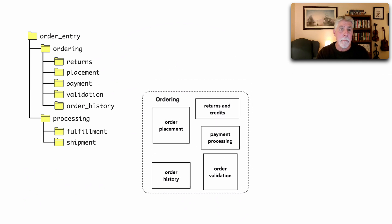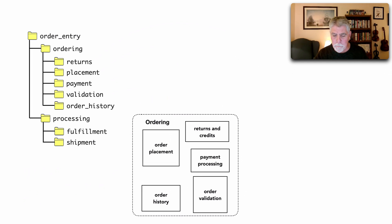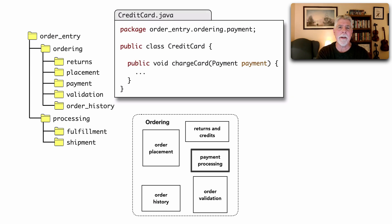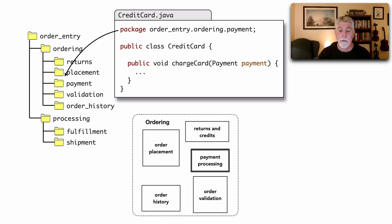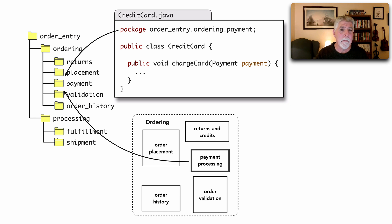Let me cement that concept with an example using payment processing again. Let's write a class file, CreditCard.java. We have a package: order-entry dot ordering dot payment — that could be a namespace. We have a class CreditCard with a public void chargeCard method that accepts a payment object. This source file has to reside somewhere, and sure enough we put it in the directory structure under payment. Our logical architecture has payment processing, which is realized through that same directory structure, meaning CreditCard.java is part of and implementing the payment processing logical component.